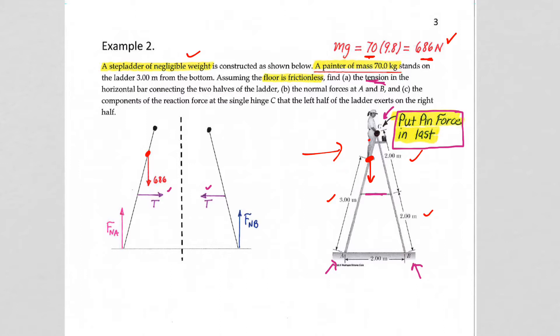Again, we said tensions pull, never push, so get your two tension forces in. Now, we're told there's no friction at the floor, so we're not going to put in a friction left to right.